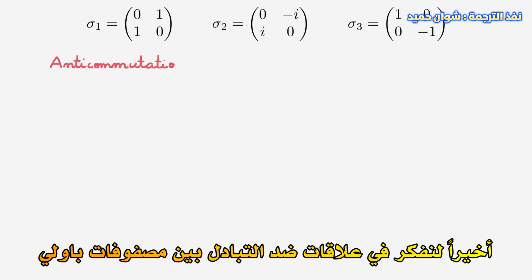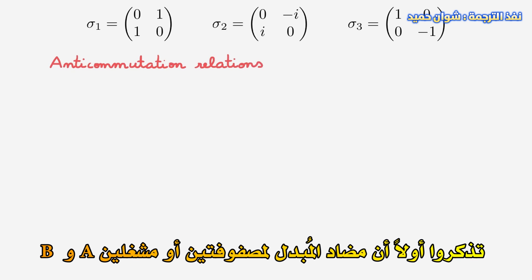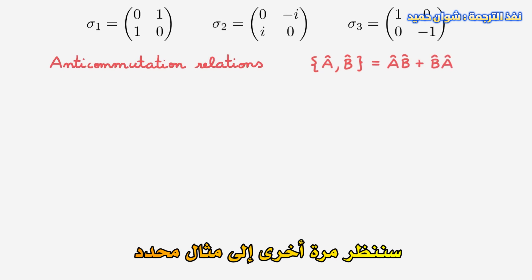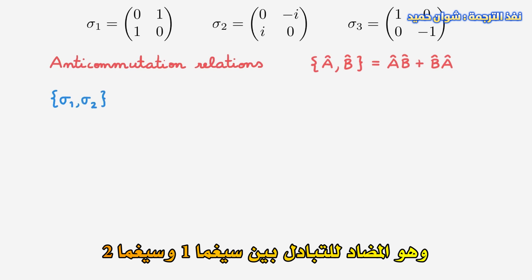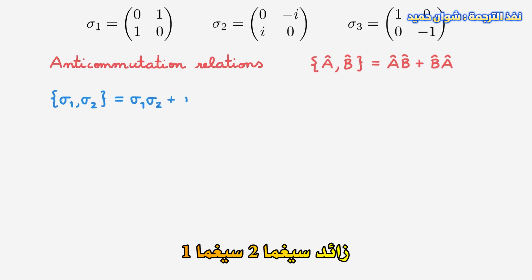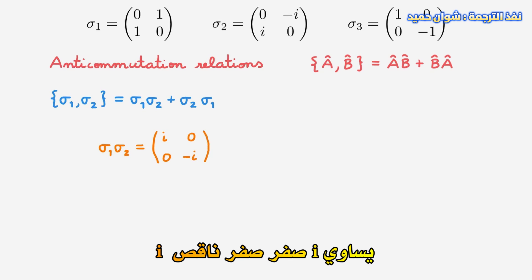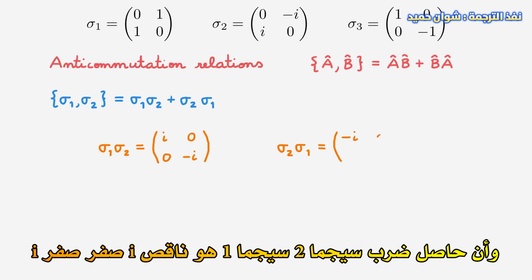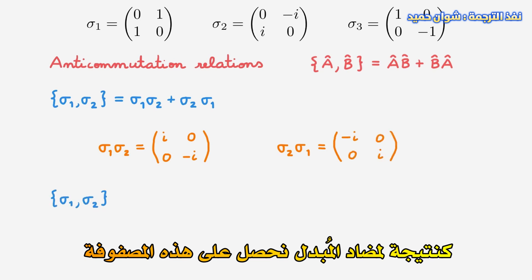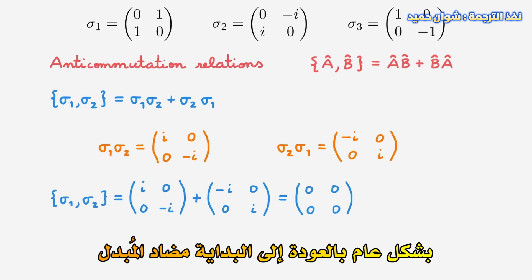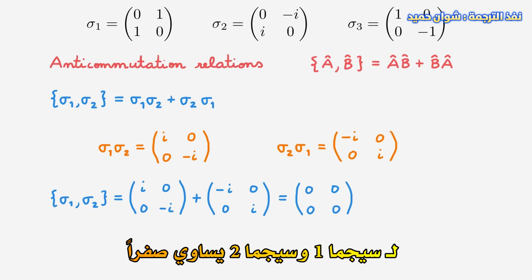Finally, let's consider the anti-commutation relations between the Pauli matrices. Remember that the anti-commutator of two matrices or operators A and B is equal to AB plus BA. We'll again consider a particular example, the anti-commutator of sigma-1 and sigma-2. We can expand this to get sigma-1 sigma-2 plus sigma-2 sigma-1. We've already established that sigma-1 sigma-2 equals [i, 0; 0, -i] and sigma-2 sigma-1 equals [-i, 0; 0, i]. Adding these two matrices together, they combine to the zero matrix. So the anti-commutator of sigma-1 and sigma-2 is equal to 0.